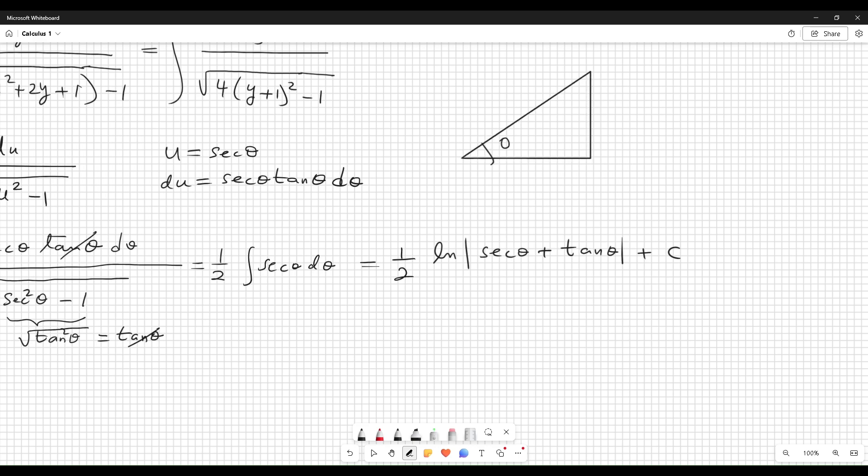Okay, now it's the moment to draw a triangle with theta. We always come back to this. Secant is hypotenuse over adjacent, and this is square root of u squared minus 1.